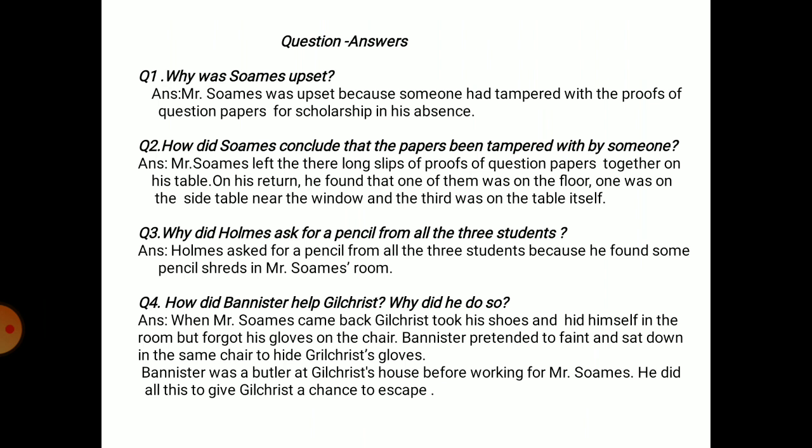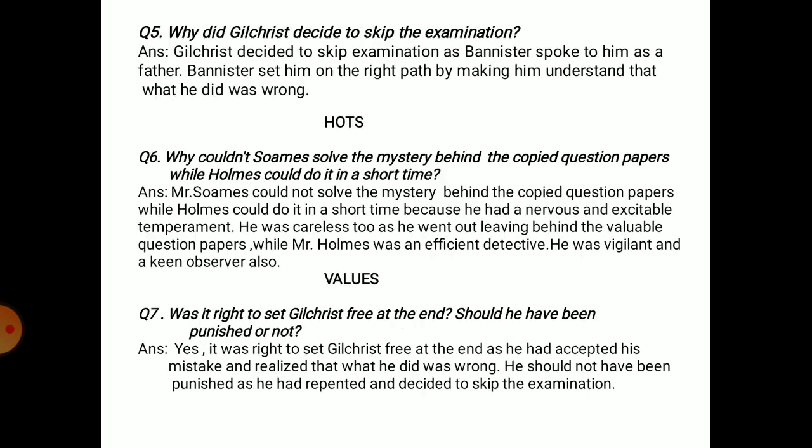Fourth: How did Banister help Gilchrist, and why did he do so? When Mr. Soames came back, Gilchrist took his shoes and hid himself in the room, but he forgot his gloves on the chair. Banister pretended to faint and sat down in the same chair to hide Gilchrist's gloves. Banister had been a butler at Gilchrist's house before working for Mr. Soames, and he did this to give Gilchrist a chance to escape.